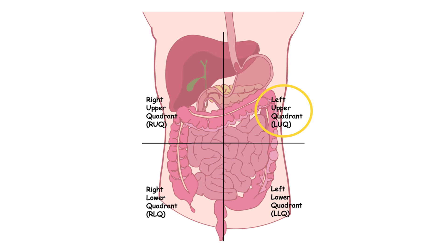The right lower quadrant, RLQ, includes the appendix, right ovary and fallopian tube in females, the right ureter, and parts of the intestines.